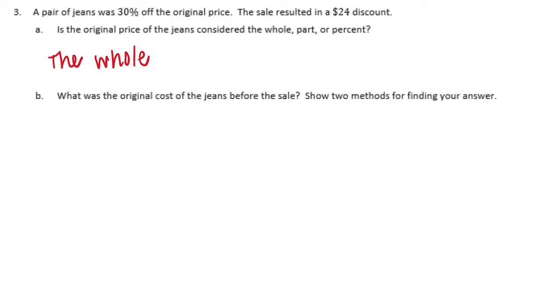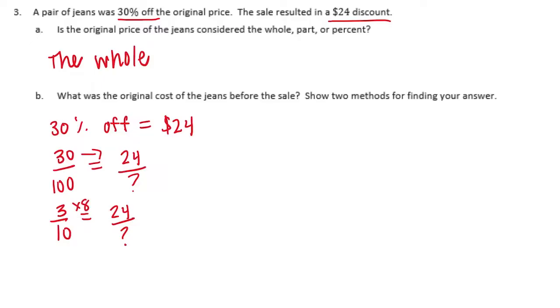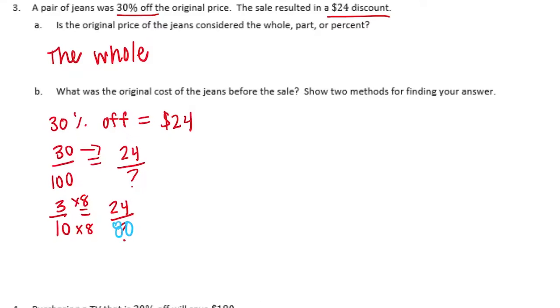What was the original cost of the jeans before the sale? Show two methods for finding your answer. So a pair of jeans was 30% off the original price, and it resulted in a $24 discount. So 30% off equaled $24. And we could write that as a fraction. So 30 out of 100 was equal to 24 out of, we don't know, yet. But we will. So I can't easily get from 30 to 24. So I'm going to do some reducing again. I'm going to make it 3 tenths is equal to 24 out of, we don't know. So now I can get from 3 to 24. So 3 times 8 is 24. Then I can just multiply down here. 10 times 8 is 80. So it looks like the sweater was originally $80.